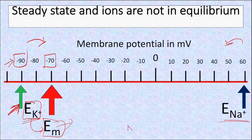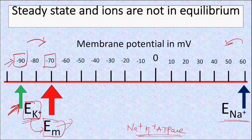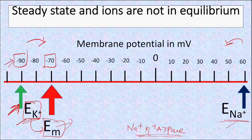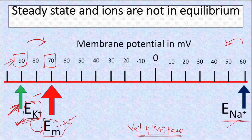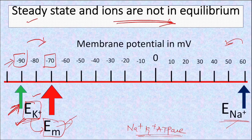In a cell, concentration gradients are maintained by active transport mechanisms. The sodium-potassium ATPase maintains the intracellular and extracellular concentrations of potassium and sodium, thereby maintaining the Nernst potential and eventually the membrane potential. Since energy is required to maintain this, we call this a steady state — the individual ions are not at equilibrium.